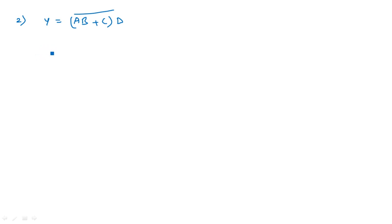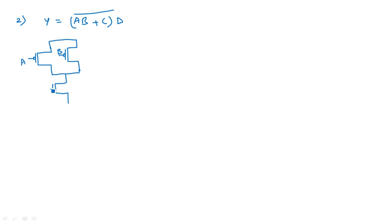For the CMOS schematic of AB plus C into D whole bar: take A and B in parallel. C must be in series with A and B. And D must be in parallel to this entire logic circuit because D is in multiplication. This is D.